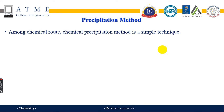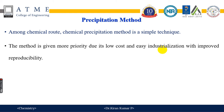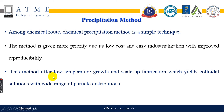Precipitation method is among the chemical routes. The chemical precipitation method is considered to be one of the simplest techniques. The method is given more priority due to its low cost and easy industrialization with improved reproducibility. This method offers low temperature growth and scale-up fabrication, which yields colloidal solution with a wide range of particle distributions.